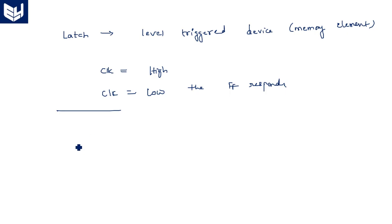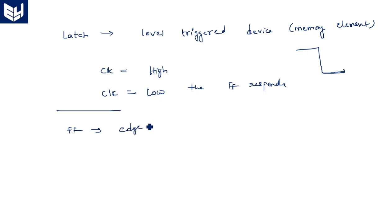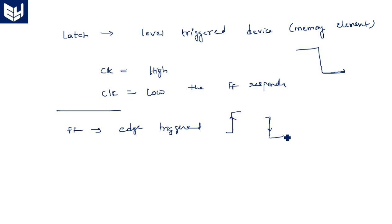If it is a flip-flop, it responds to either rising edge or falling edge — it is edge triggered. Only at the rising or falling edges, if there is any change, that will be considered; remaining cases will not be considered. Suppose during the high level if any change occurs, that will not be noted.